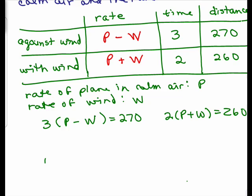Now you could do the distributive property on each of these, but I always look to see if there's an easier way to deal with it first. Notice that I have a factor of three out here, and three goes into 270. I have a factor of two out here, and two goes into 260. Instead of doing the distributive property, you could just divide each side by three. That's going to cancel, and then I get a little easier equation: P - W = 90.